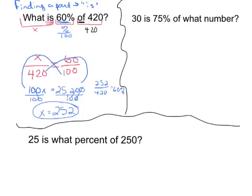The next setup is what can be called finding the whole, finding the 'of'. And I'm going to do something kind of similar. You'll notice the setup is kind of similar. The 30 is... 75% is the percentage. And then the 'of what number' is the unknown.